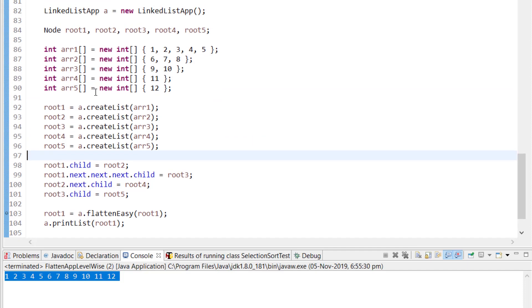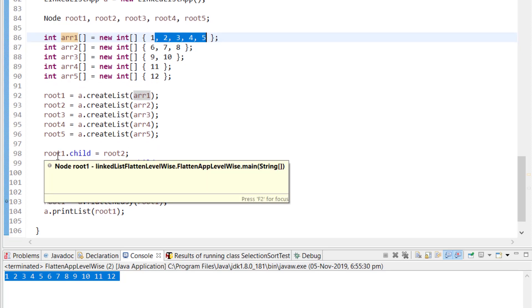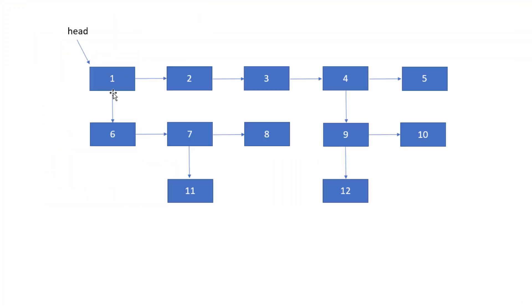I create each list using arrays: array 1 has 5 elements, array 2 has 3 elements, array 3 has 2 elements, and so on. Once I have each list, I point the child of the root of one list to the root of the next list. This is how the complete multi-level linked list is constructed. We'll solve this problem, explain the logic, then implement it in Java, and finally discuss time and space complexity.